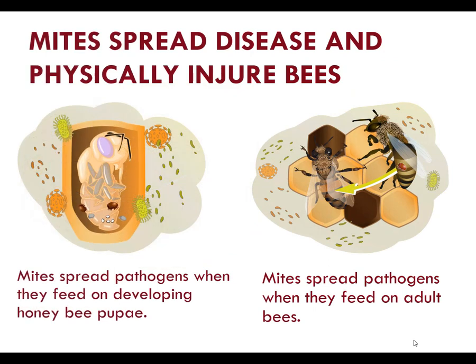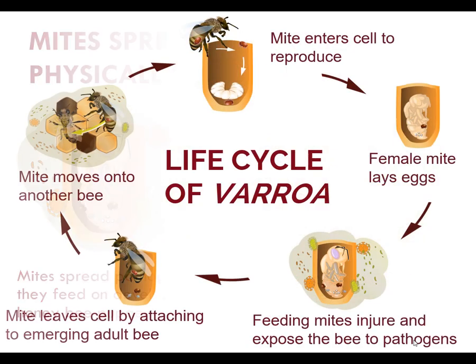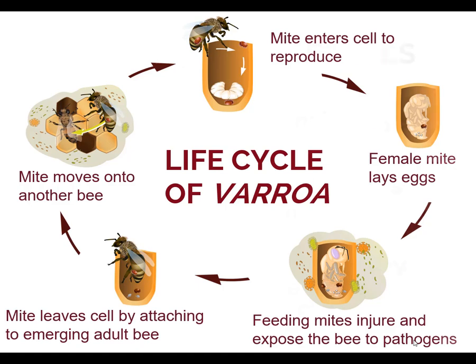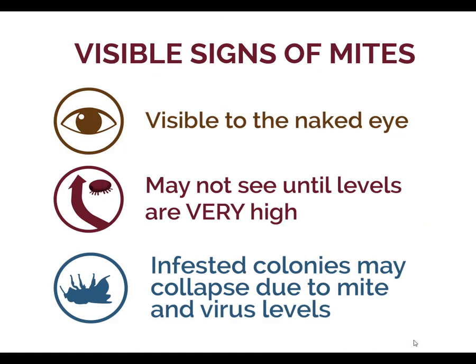Mites spread pathogens when they feed on developing honeybee pupae. They also spread pathogens when they feed on adult bees. Because the Varroa mites are often reproducing in honeybee pupal cells, they can sometimes be difficult to detect. Varroa mites are relatively large on the body of a honeybee and most people are able to see mites without a microscope. Nevertheless, most beekeepers won't see Varroa mites on bees unless the Varroa mite levels are very high. Since Varroa mites are often on the underside of honeybees and between their abdominal segments, beekeepers won't be able to see most Varroa mites just by looking at a frame of bees.